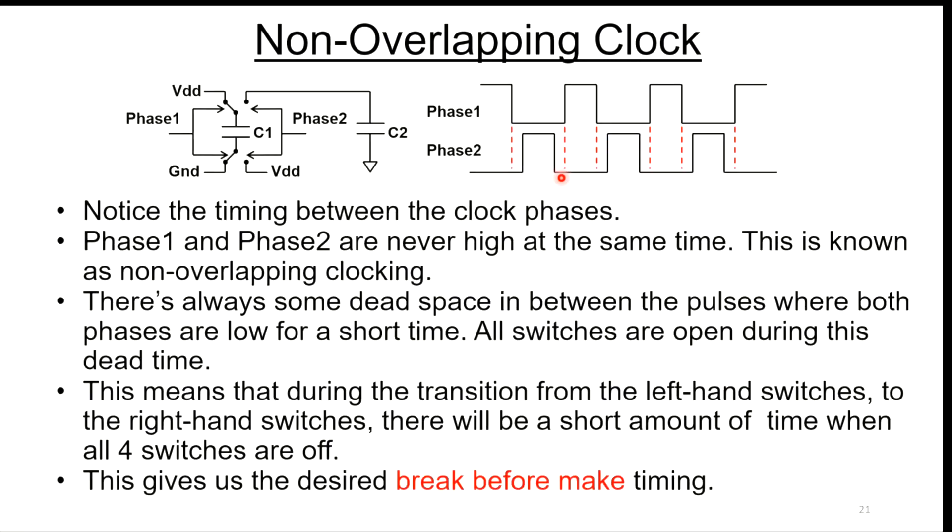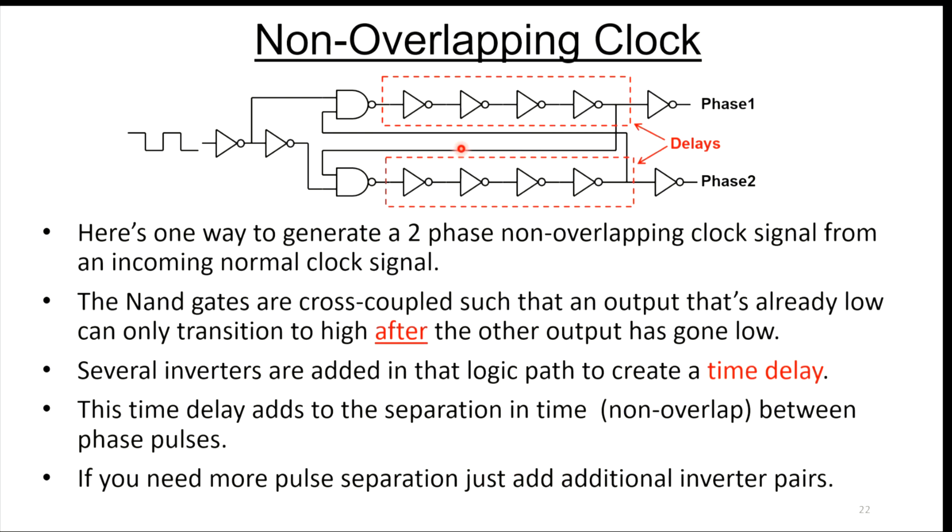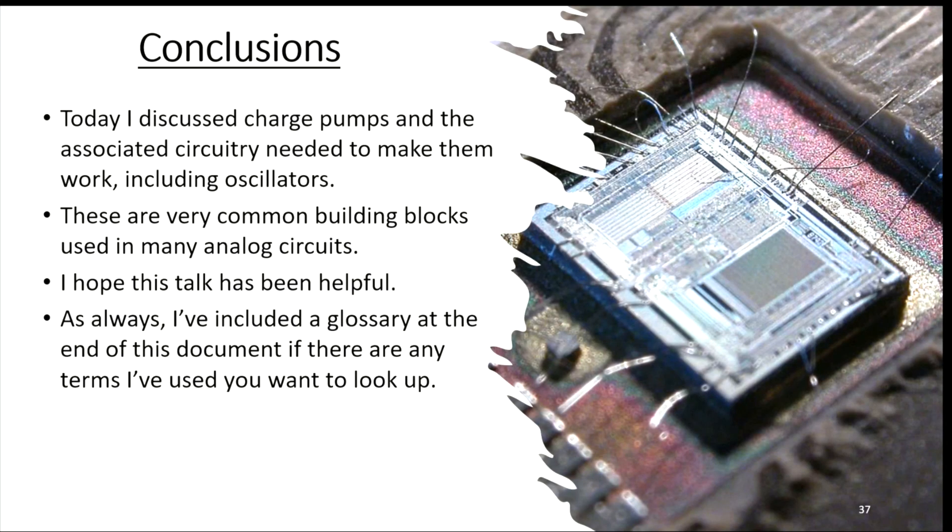You also want a little time gap in there. That's what these inverters are in here for. Those give you the delays. The delay between phase one and phase two is basically set by the propagation through these inverters. If you need a longer delay, you just add more inverters to this string.